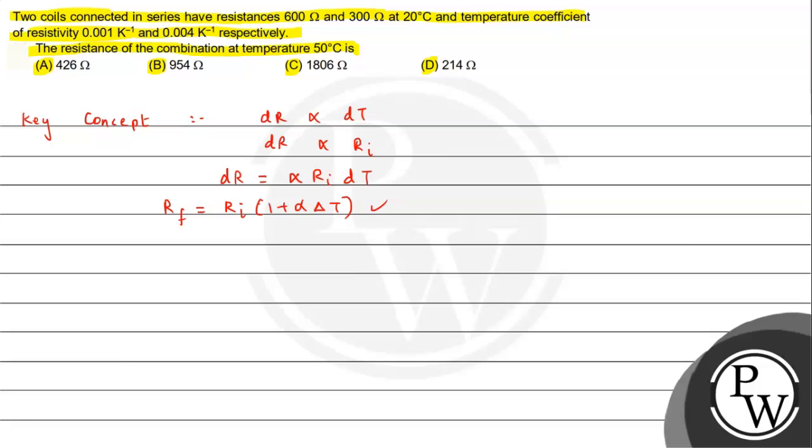We also need to remember that for resistances in series, the equivalent is R1 plus R2 and so on. We have two resistances given at 20 degrees Celsius. First, we will calculate the resistance of each coil at 50 degrees Celsius.